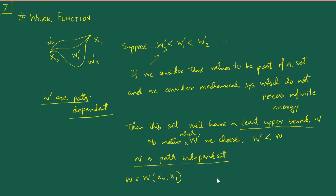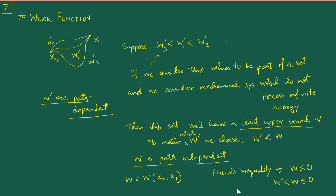In terms of this useful quantity, we can restate Fourier's inequality. Fourier's inequality can be written using this w: if w is less than or equal to zero, then it is automatically guaranteed that no matter which admissible path you consider, the virtual work associated with all of them is also less than or equal to zero — because all w-dashes are less than w, and w itself is less than or equal to zero. In this way, Fourier's inequality can be stated in a path-independent fashion.